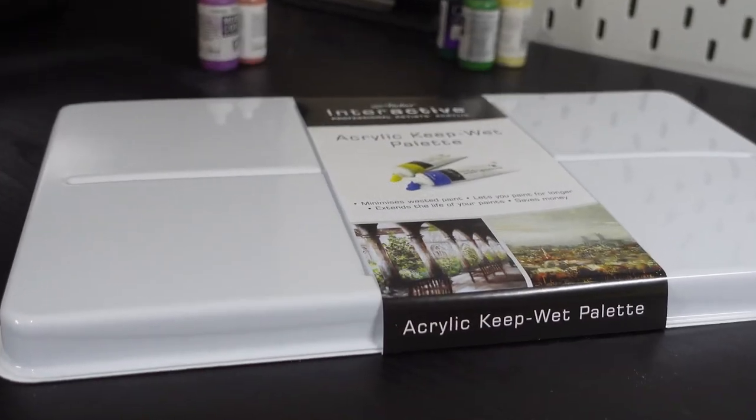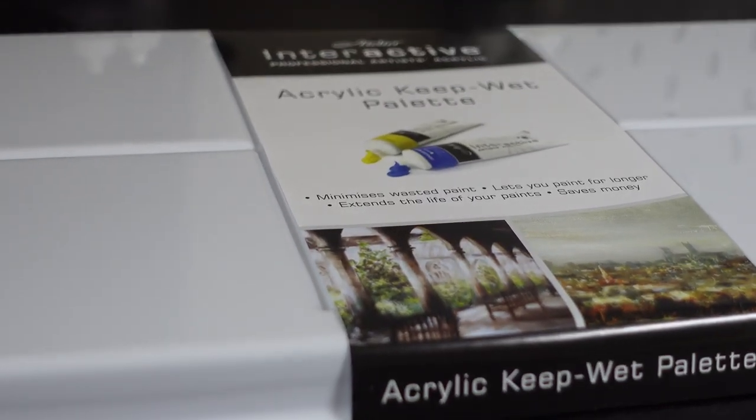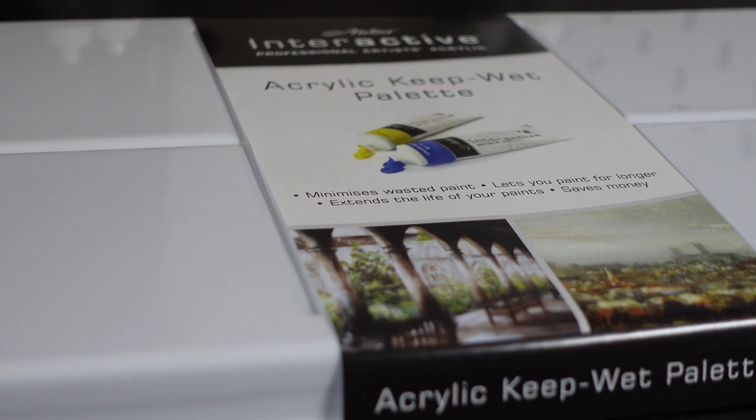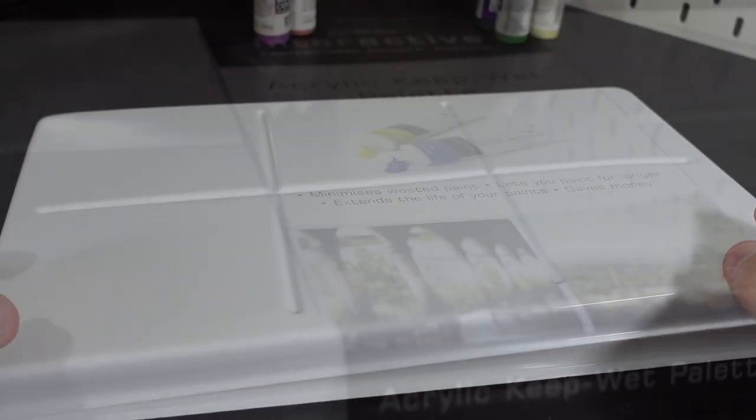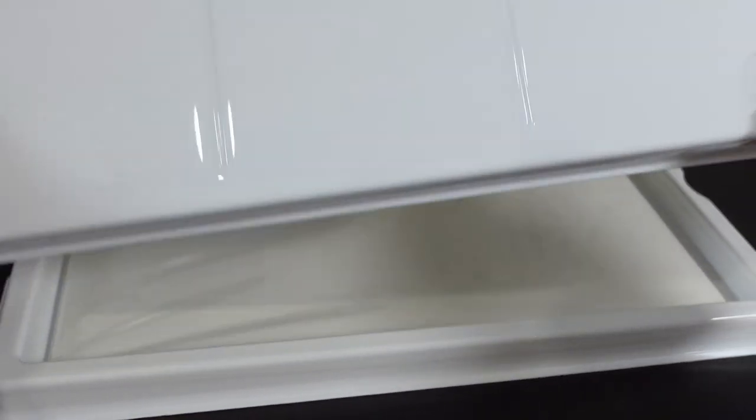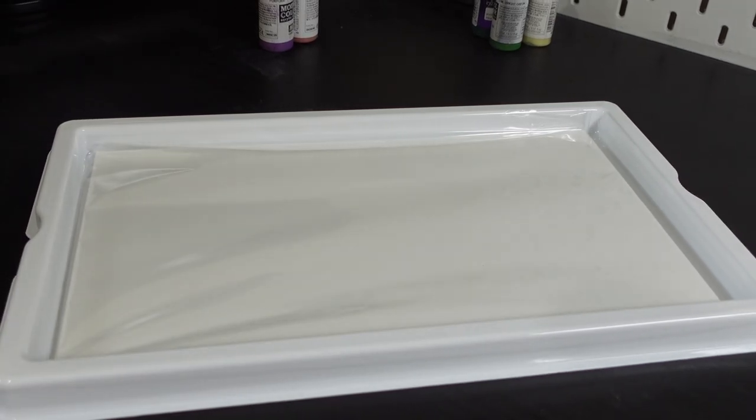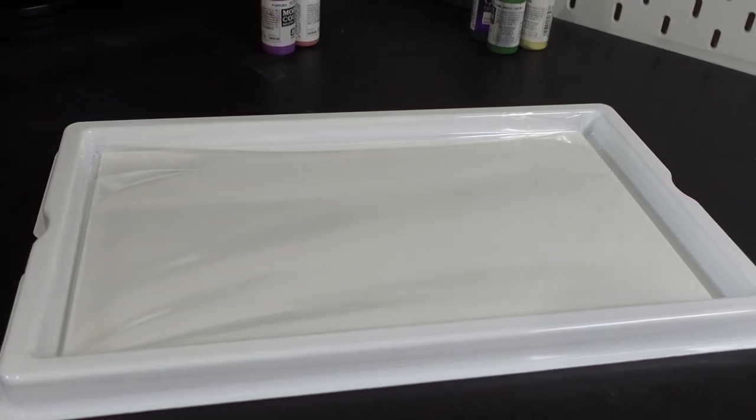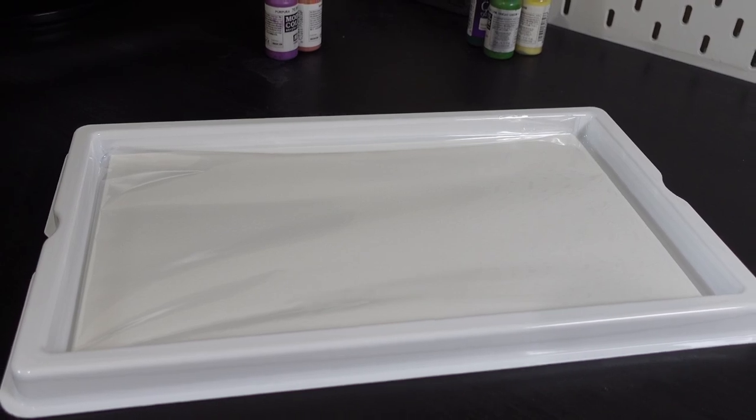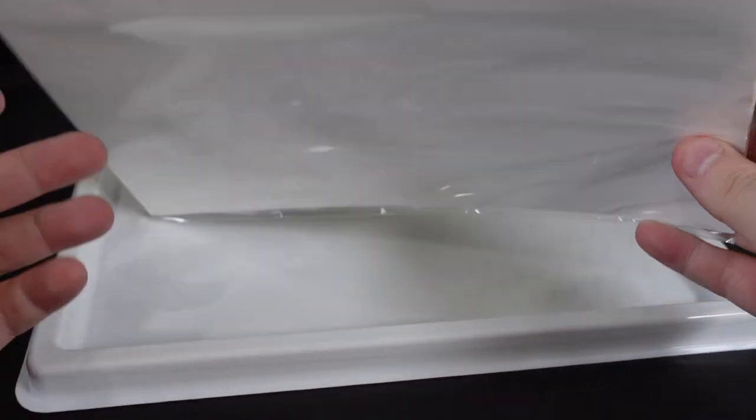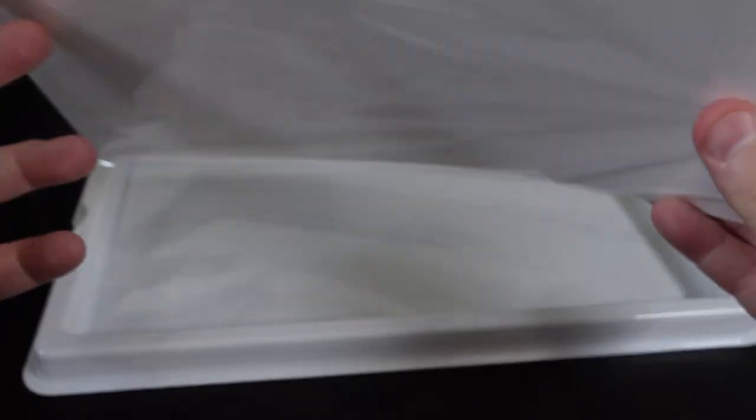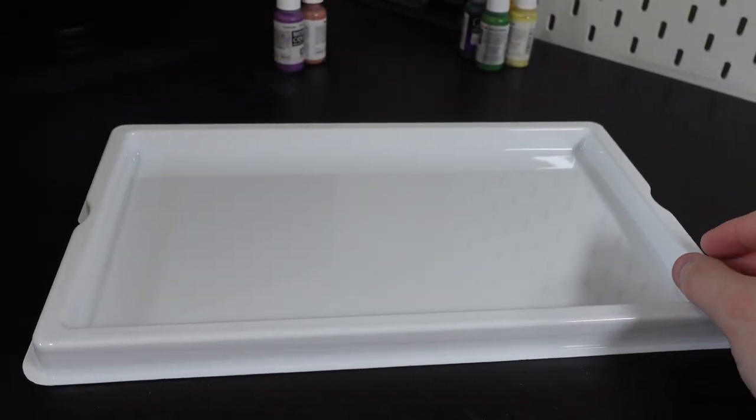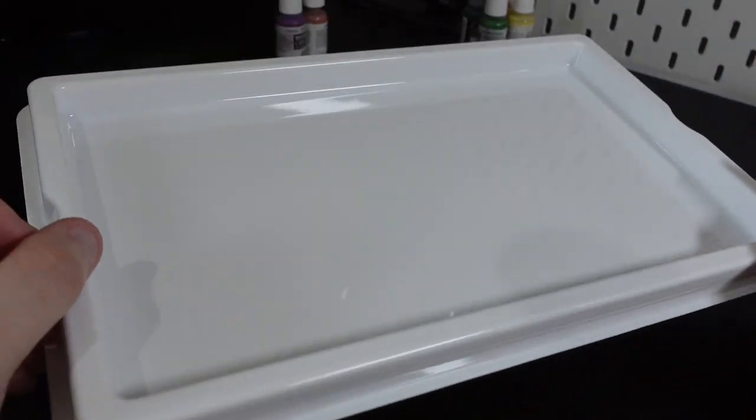There's really only three things I want in a palette case. I want it to be shallow, so I don't have to reach down too far to get my paints. I want it to be reasonably airtight so that it holds a soggy atmosphere, and I want it to be massive because I'm greedy and I paint a lot. This palette does all of these things, but as a bonus, we also use the same membrane sheets that come with it too, meaning that we get a lovely two for one on the pack of included sheets that are with it.